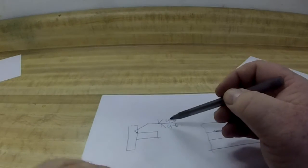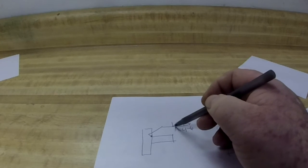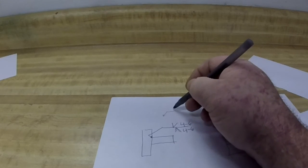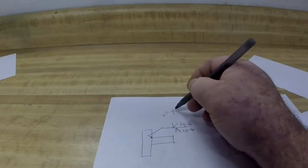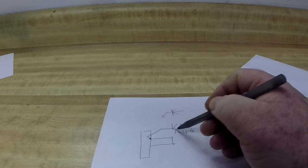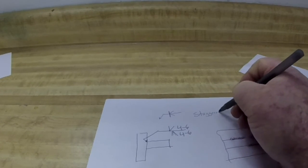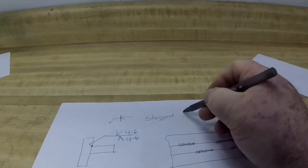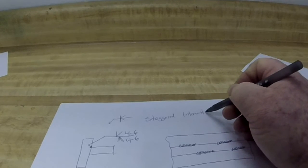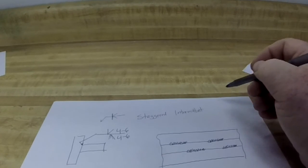Now if we look at our symbol here, we have almost the same thing, except you'll notice that these are not directly on top of each other. In our other joint, what we had was notice how they're directly on top of each other. In this one, they are offset, they are staggered. So what we have now is a staggered intermittent weld.